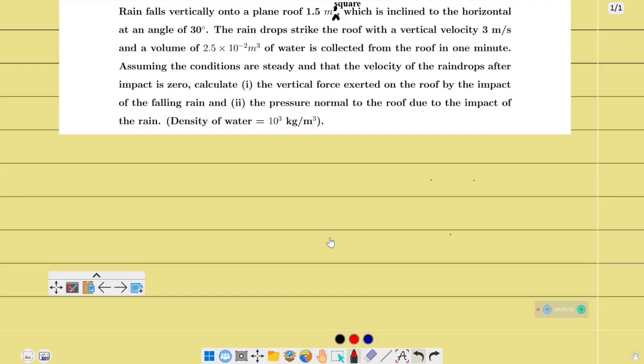The question is: rain falls vertically onto a plain roof of 1.5 meters square. I will give you a figure of this idea. If you can see, I will show you. In this square roof, there will be water. The water has velocity downwards vertically. This is the velocity of rain, which is downwards, which is inclined to the horizontal at an angle of 30 degrees.